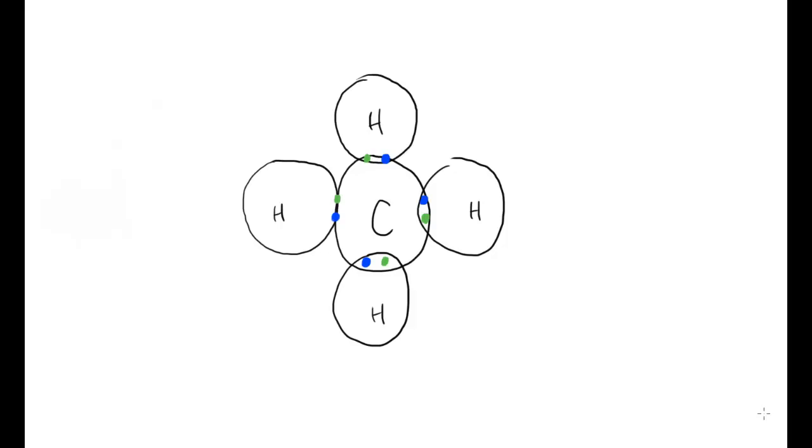So what we've got here is a terribly drawn dot and cross diagram of a methane molecule, where we can see the central carbon and the four hydrogens bonded to that, each one connected by these two electrons here, this shared pair of electrons, obviously that being our covalent bond.